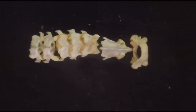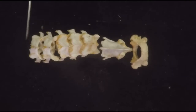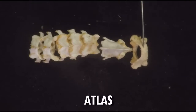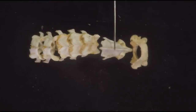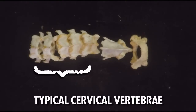The cervical vertebrae — there are seven of them, and the first two look really different from the remaining five. The first one is what we call the atlas. The second one is the axis. These five would be your typical cervical vertebrae.